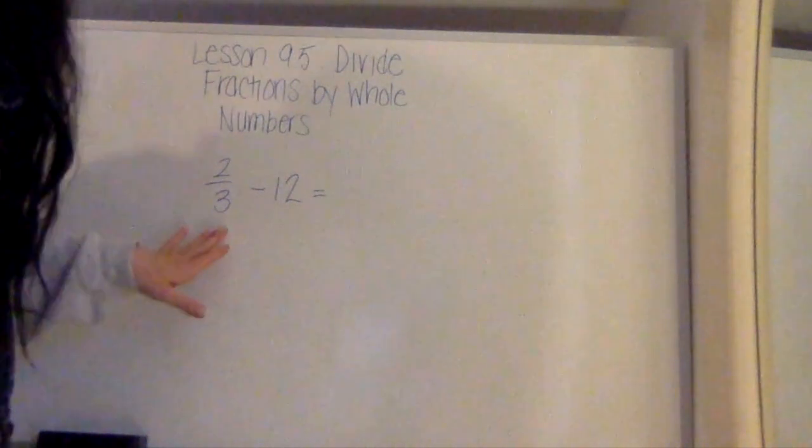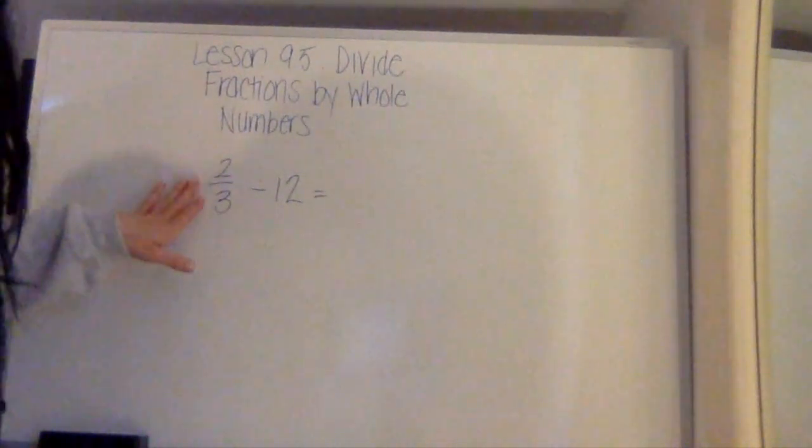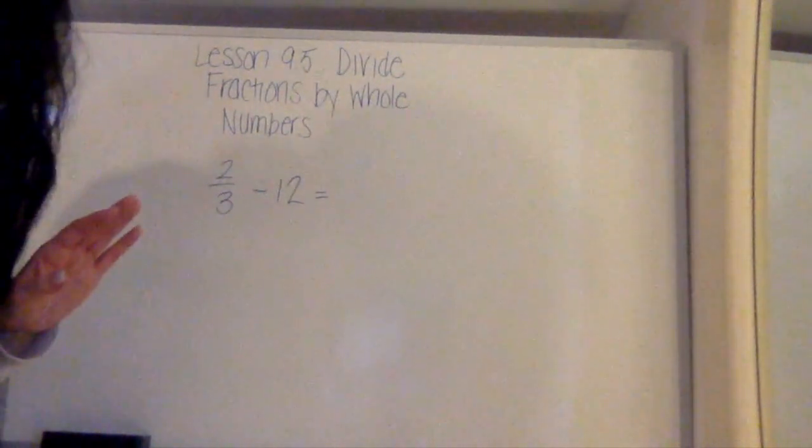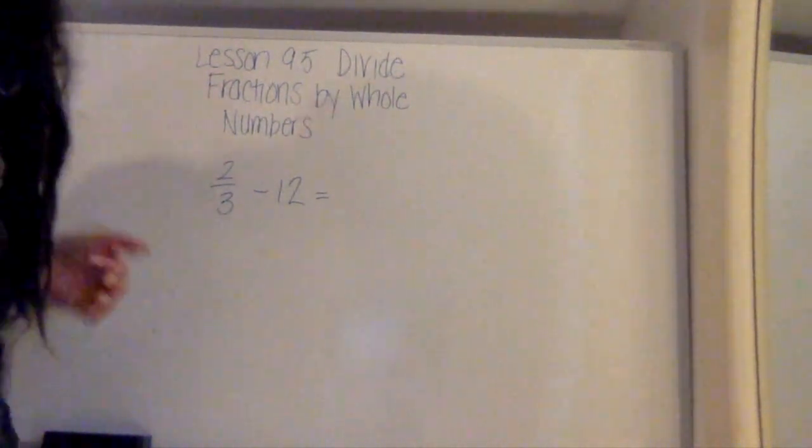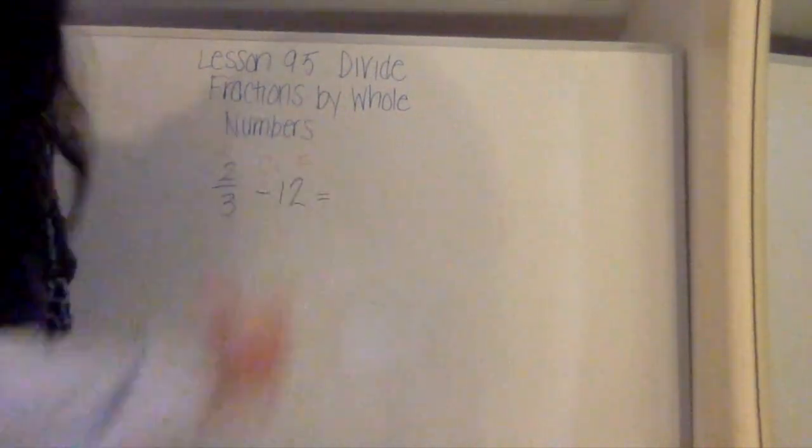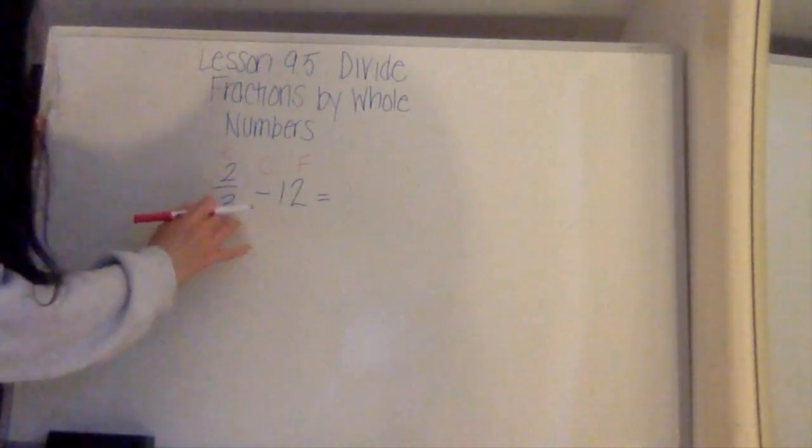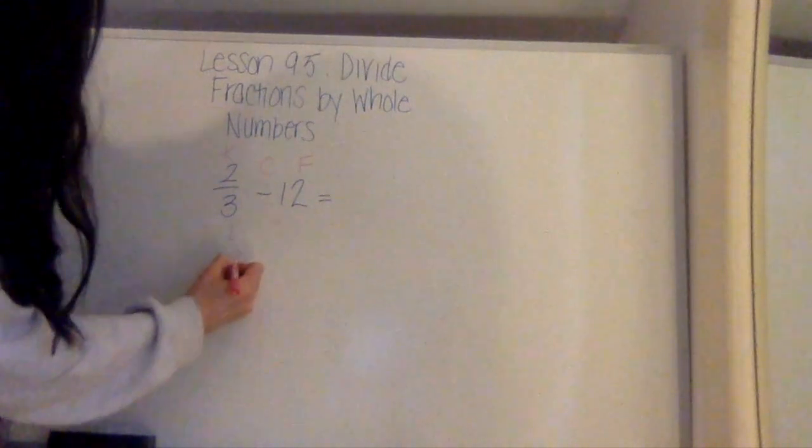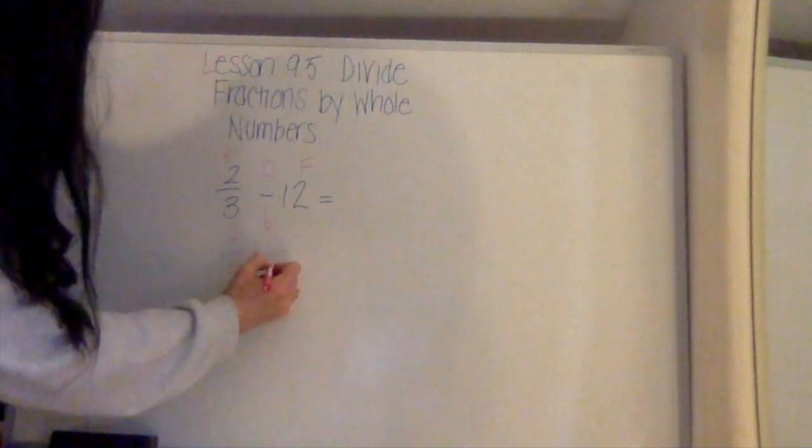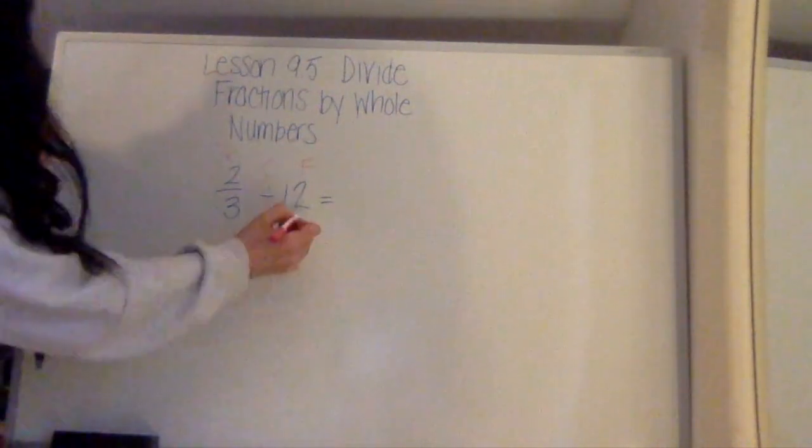So when we're dividing fractions, regardless of whether the fraction is first or second, whether it's the dividend or the divisor, we're going to follow our rule of keep, change, and flip. So we keep the first number the same, so the 2/3 stays as 2/3. We change the division into multiplication, and we flip the second number.